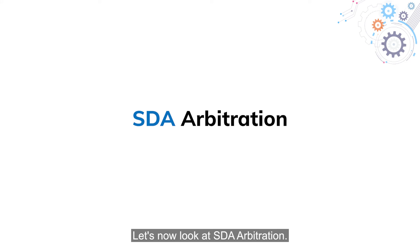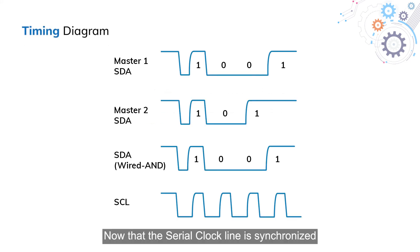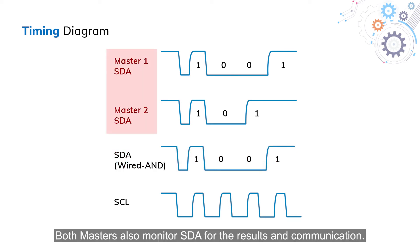Let's now look at SDA arbitration. Now that the serial clock line is synchronized, arbitration is done on the SDA line. Both masters transmit data normally on SDA, sending their communication to the intended slave. Similar to SCL, SDA is a wired-AND connection. Both masters also monitor SDA for the resulting communication.